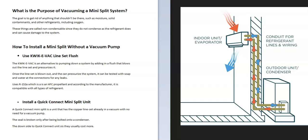First of all, what is the purpose of putting a vacuum on a mini split? It's basically to get rid of anything that doesn't belong inside the system. When you install a mini split, you have the indoor unit, the outdoor condenser, and the line set bolted up in between the two.